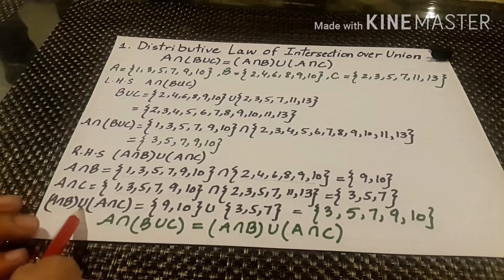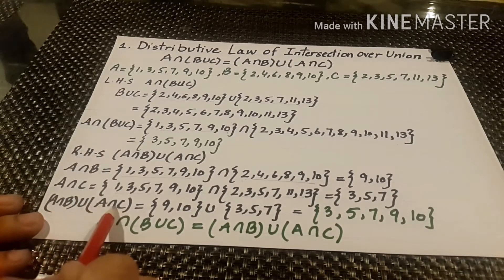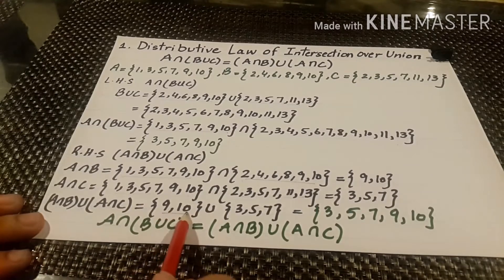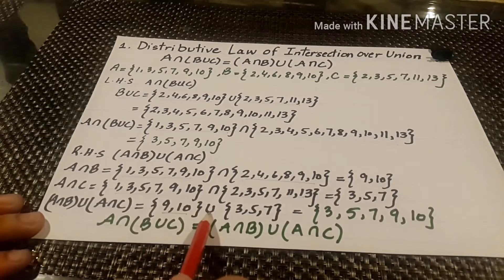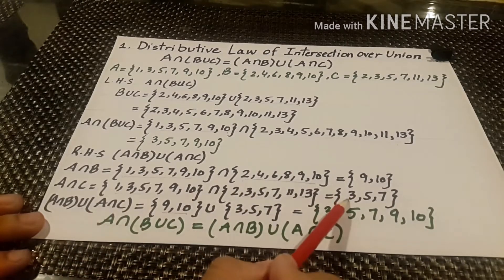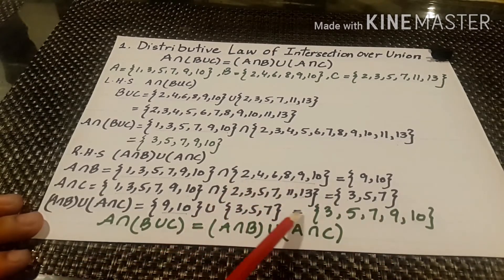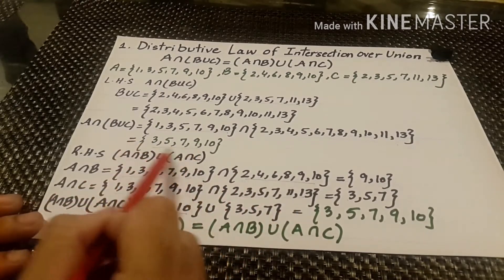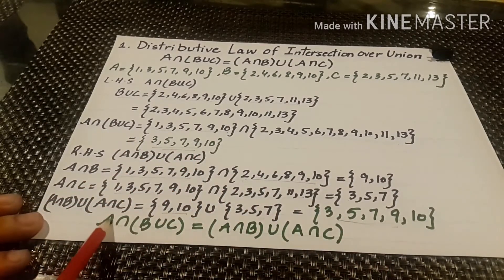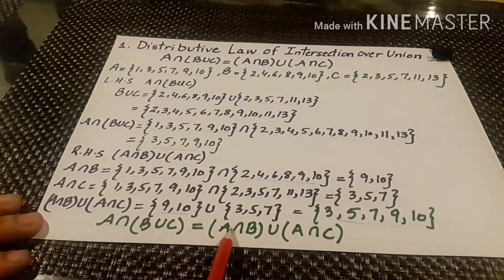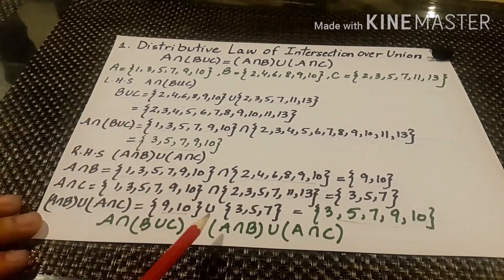Now we make the union of them. A intersection B union A intersection C — the values of A intersection B are 9, 10 and of A intersection C are 3, 5, 7. We unite them and get 3, 5, 7, 9 and 10. Both sets have the same values, so our law is proved: A intersection (B union C) equals A intersection B union A intersection C. This is the tabulation method.